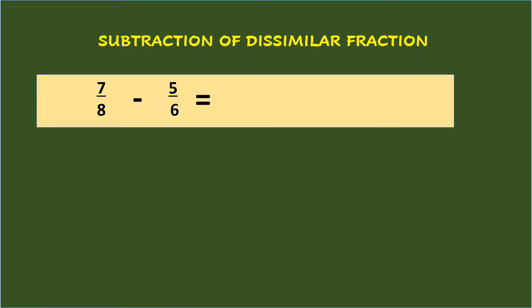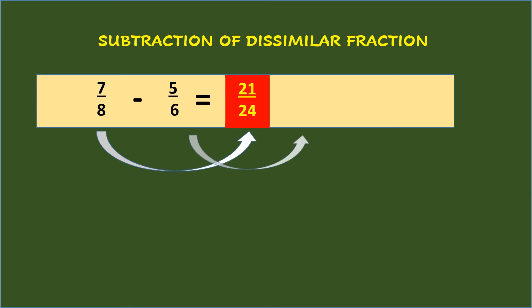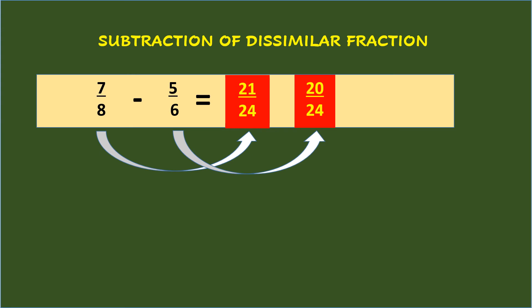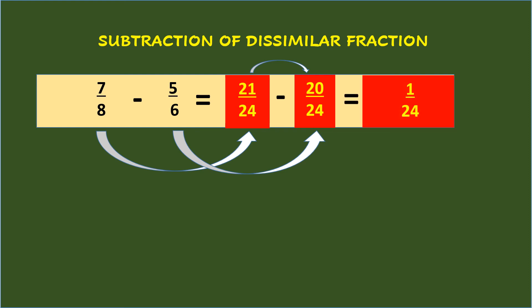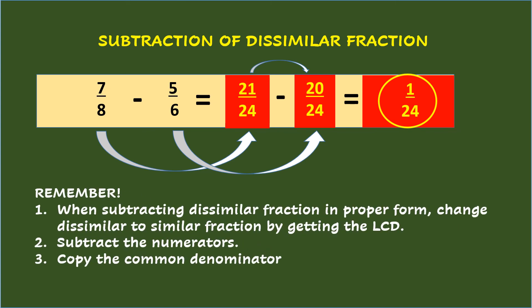Meanwhile, when you subtract dissimilar fractions like 7/8 minus 5/6, get the LCD of the denominators 8 and 6, which is 24. LCD 24 divided by 8 times 7 is 21/24, and for 5/6, LCD 24 divided by 6 times 5 is 20/24. Once they are similar, subtract the numerators. So, 7/8 minus 5/6 equals 1/24. Remember: when subtracting dissimilar fractions in proper form, change dissimilar to similar fractions by getting the LCD, subtract the numerators, and copy the common denominator.